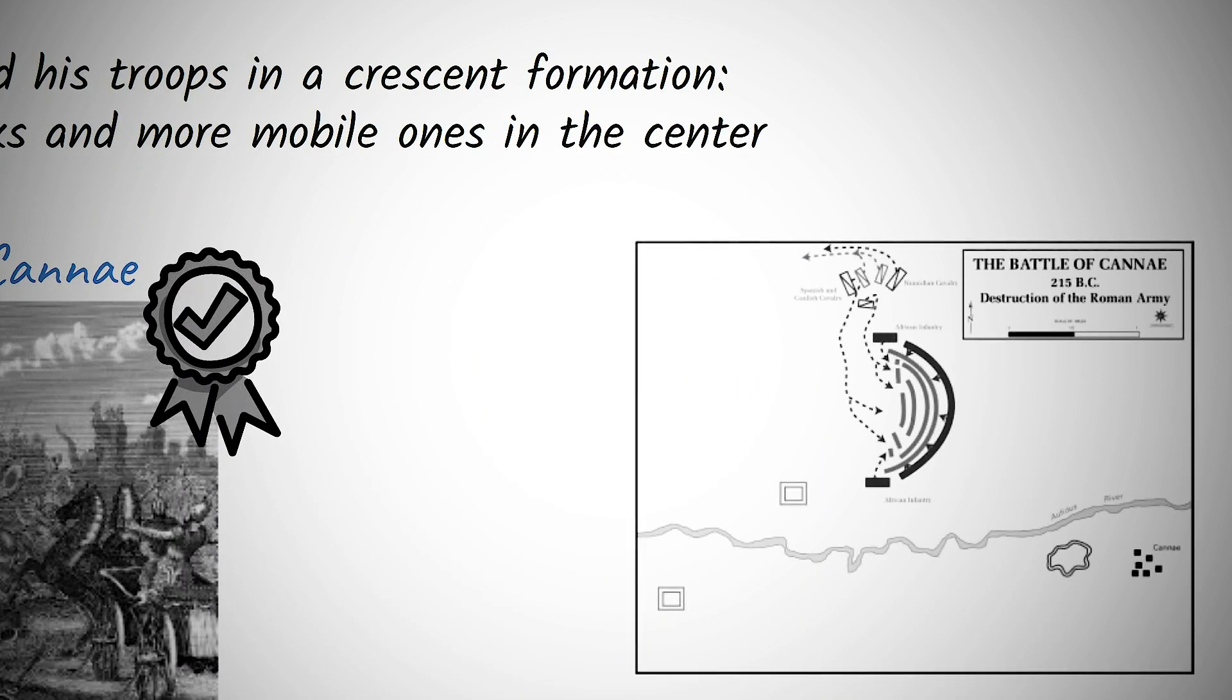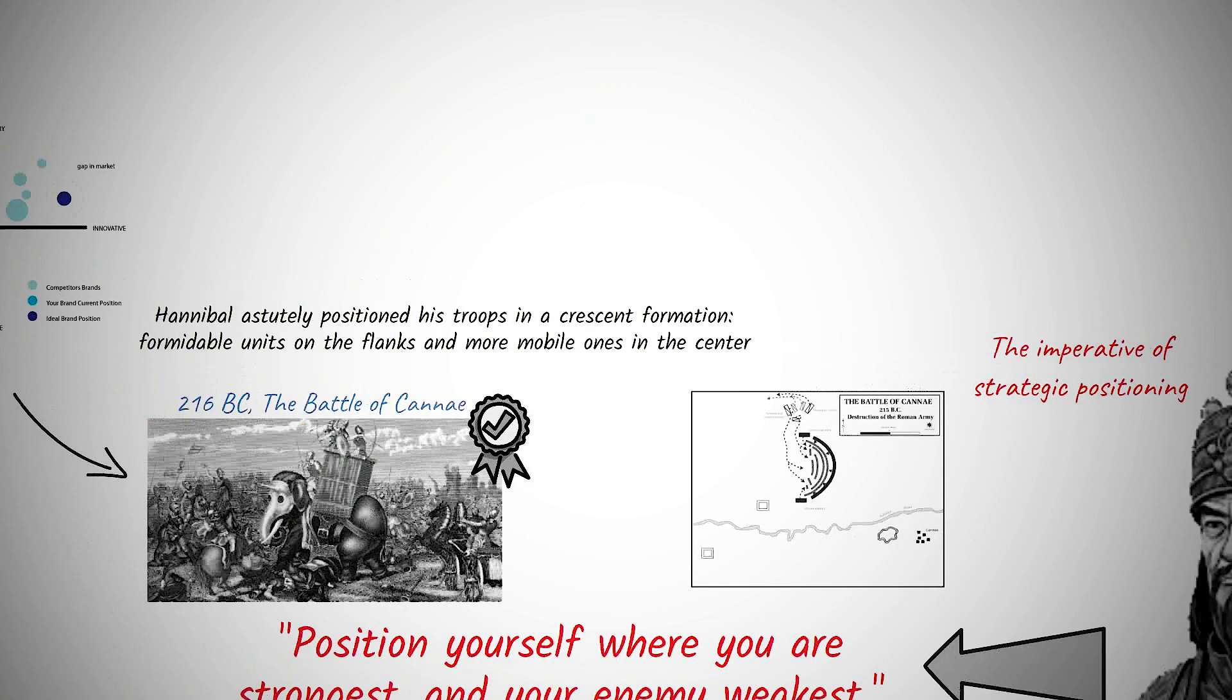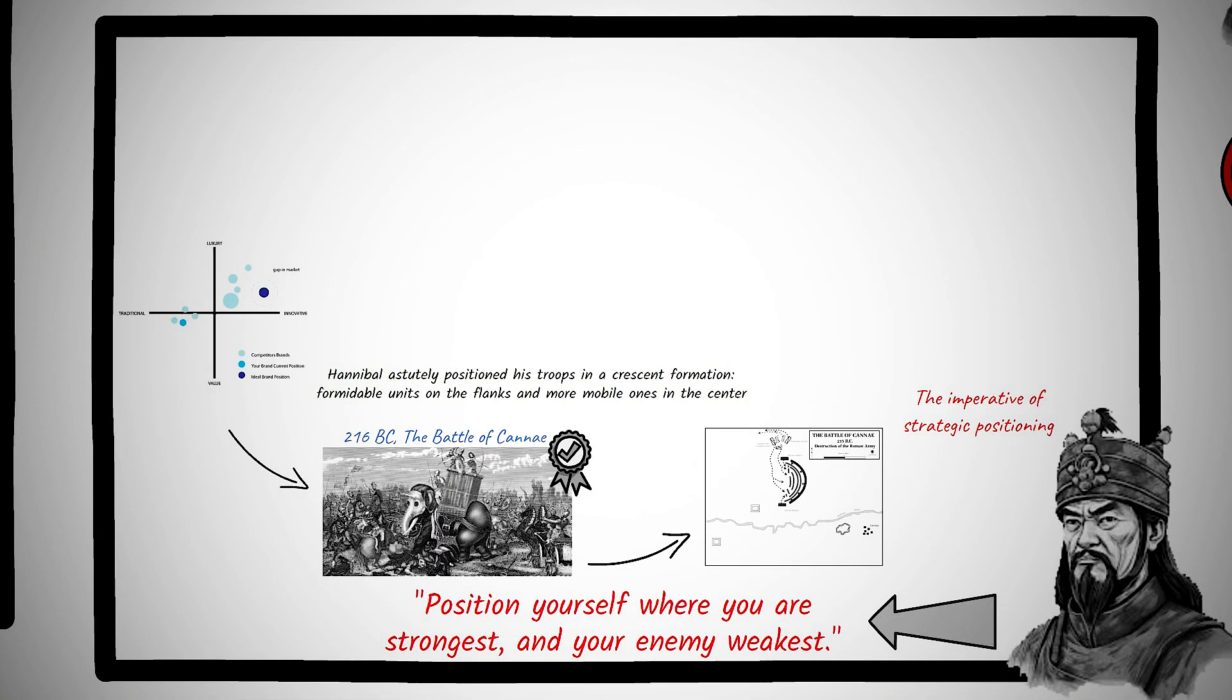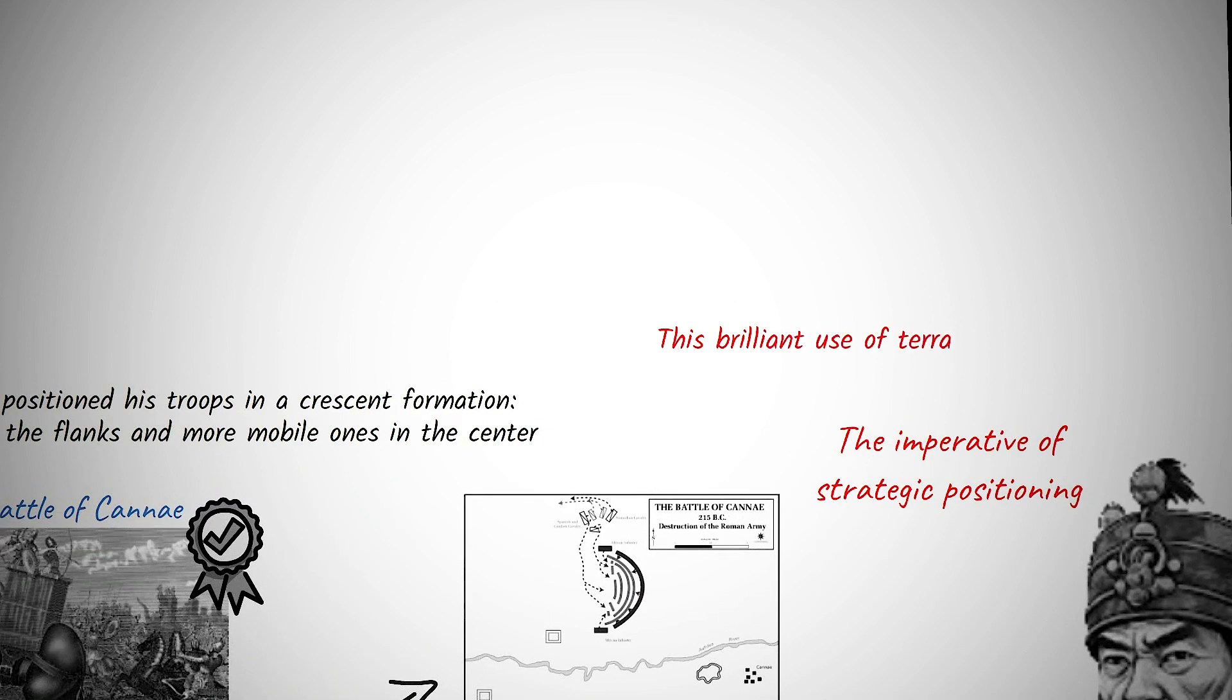As the Romans advanced, they found themselves funneled into this formation, getting trapped as Hannibal's sides curved inwards, enveloping them. This brilliant use of terrain and troop strengths led to a devastating Roman defeat, marking Cannae as an exemplary demonstration of strategic positioning in warfare.